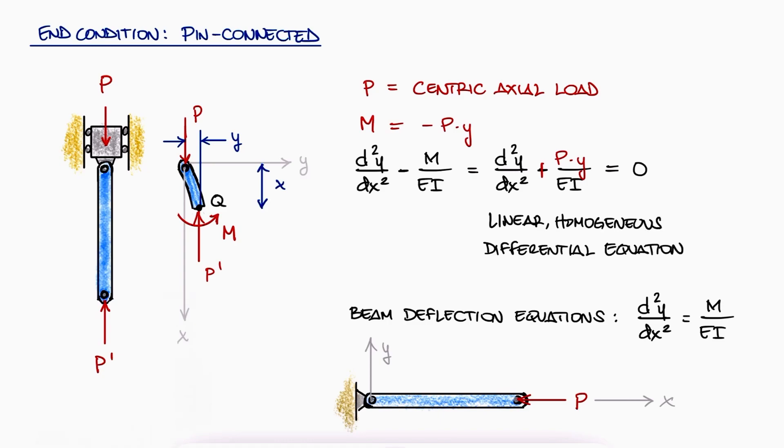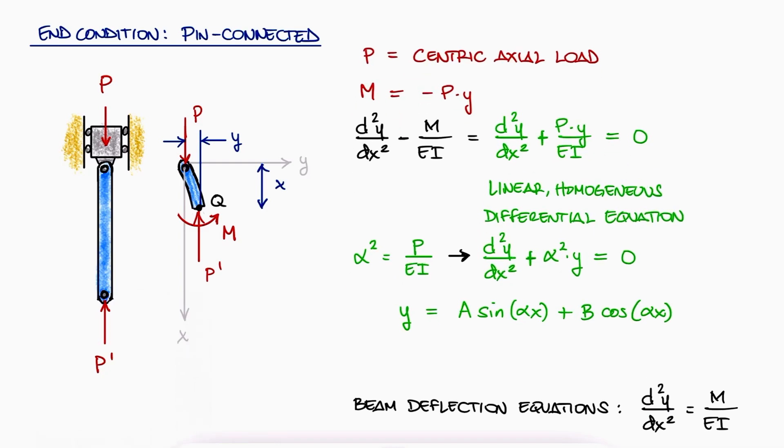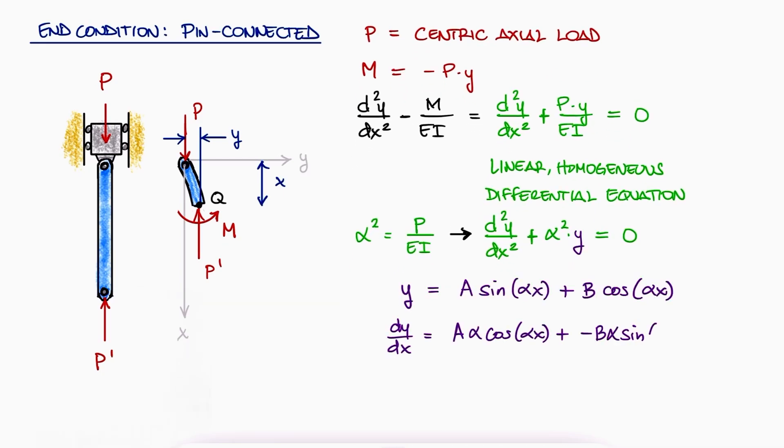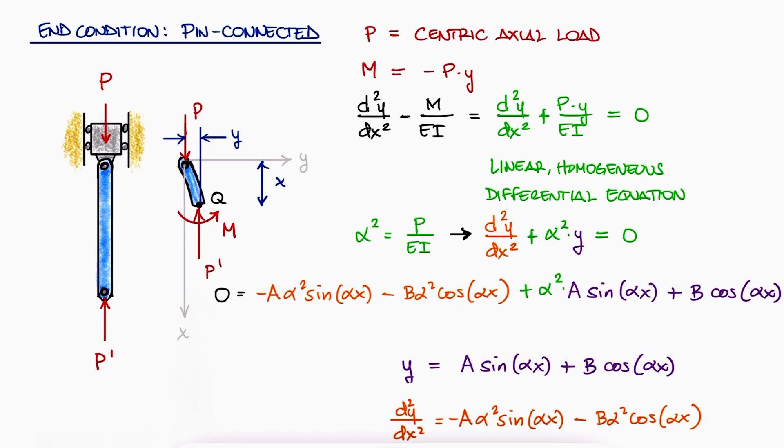If we set alpha squared to be P over EI, the expression can be rewritten to see that the general solution of the y function is A sin(alpha x) plus B cos(alpha x). This is the generalized solution because if we differentiate this y twice, the original expression is indeed zero.